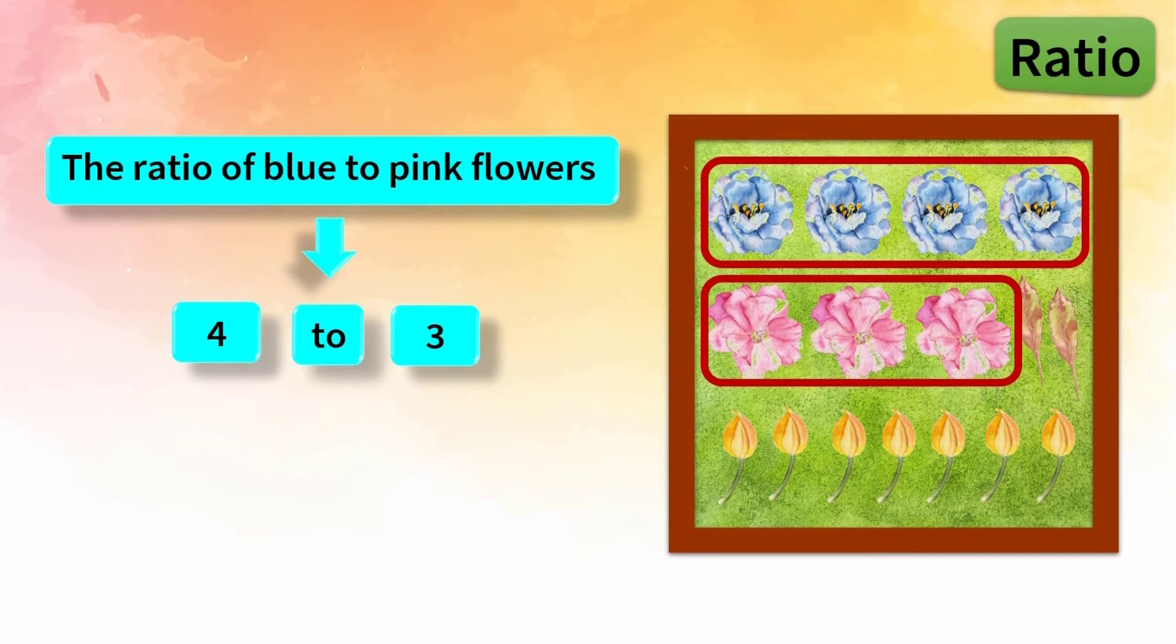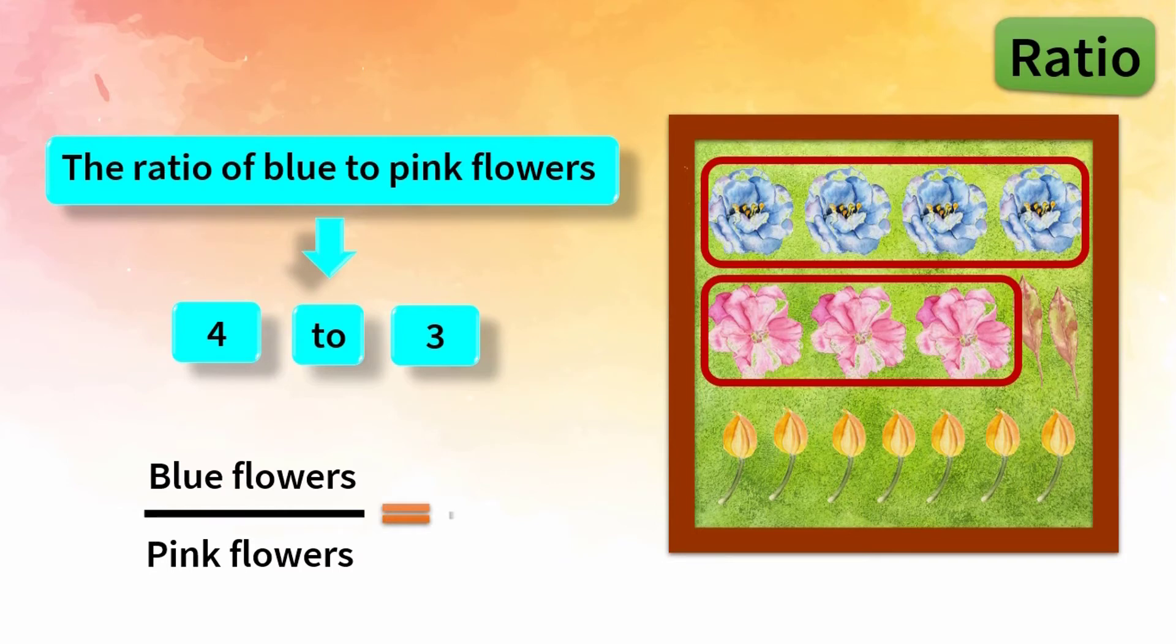Mathematicians don't usually write it that way. There are other ways of writing it. In the first one, fractions are used to describe ratios. Accordingly, the ratio of blue to pink flowers is read as 4 to 3, but written fractionally. You should notice that it's not said four thirds.